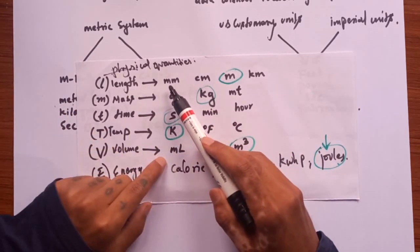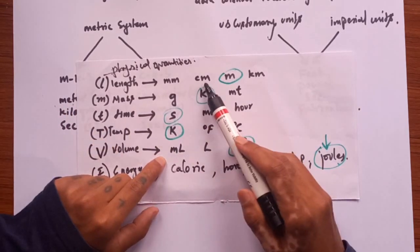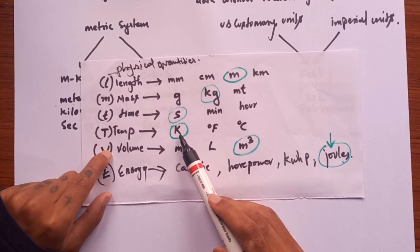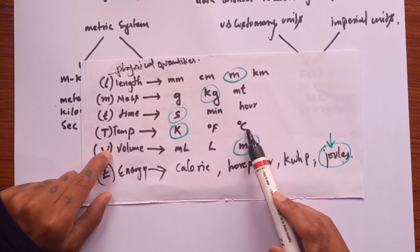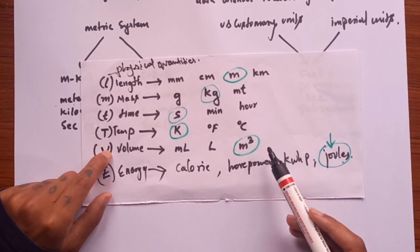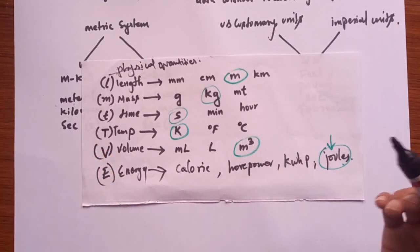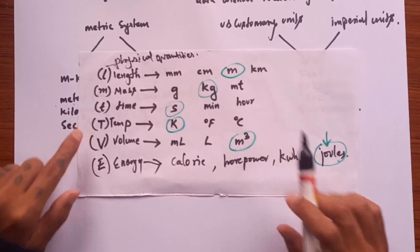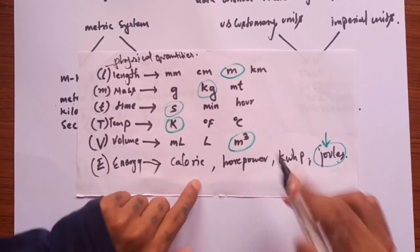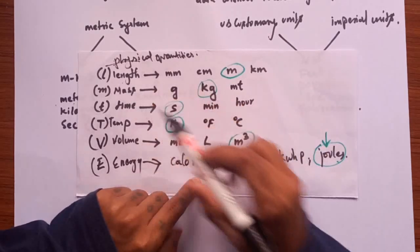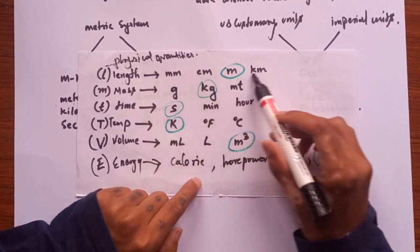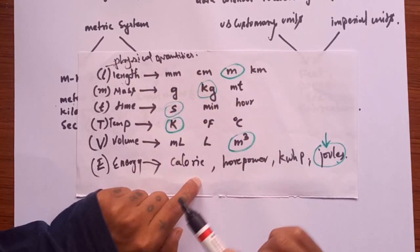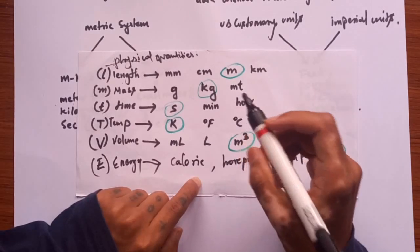We measure these physical quantities in many forms of units. Take for example length: we can measure in terms of millimeter, centimeter, meter, or kilometer. Temperature can be measured in Kelvin, Fahrenheit, or degree Celsius. Volume in milliliters, liters, or meter cube. One of these units is taken out of all these units that represents the physical quantity. One of them is taken as the standard one to define the particular physical quantity, and those standard ones are called the SI units.